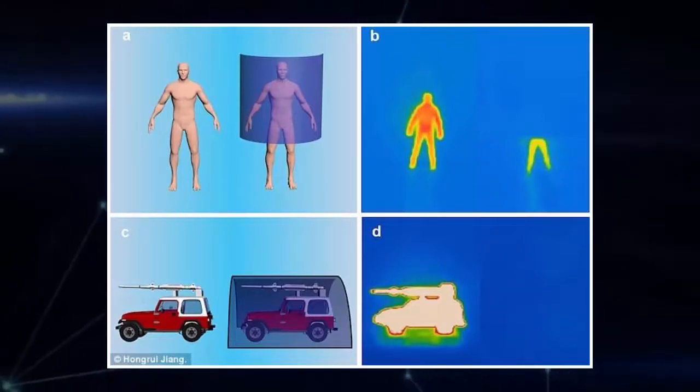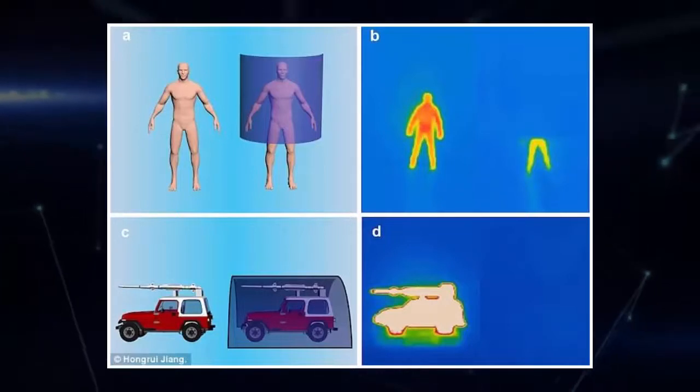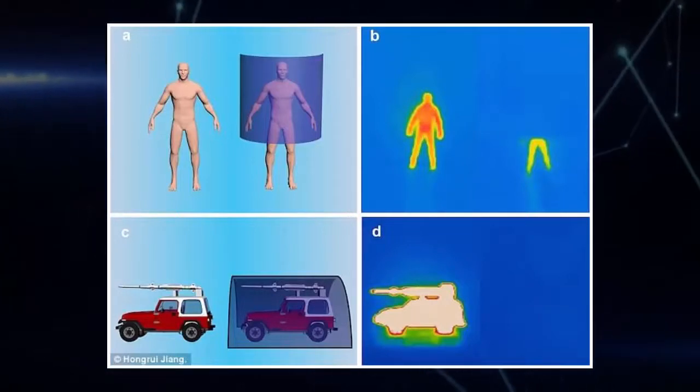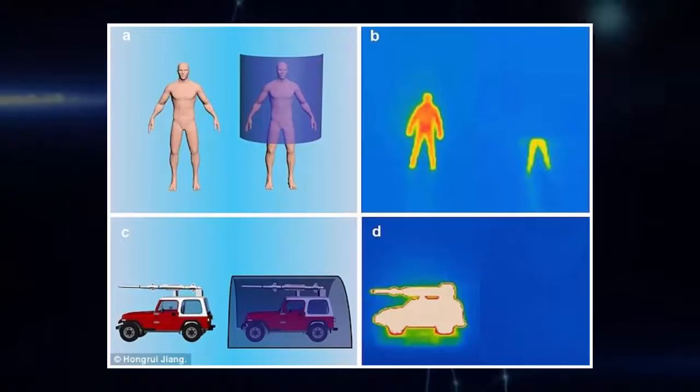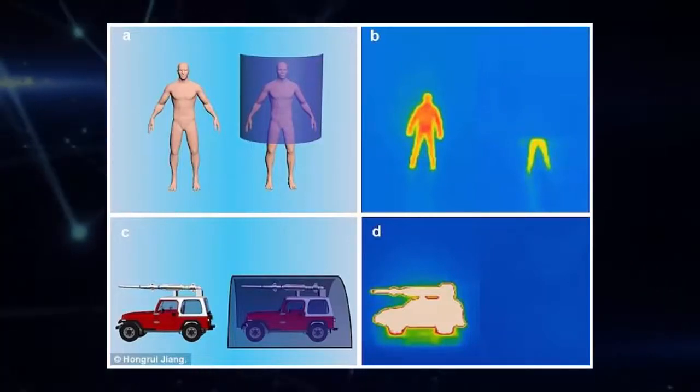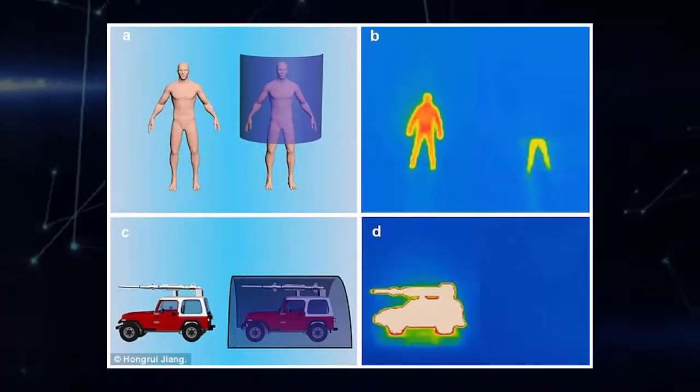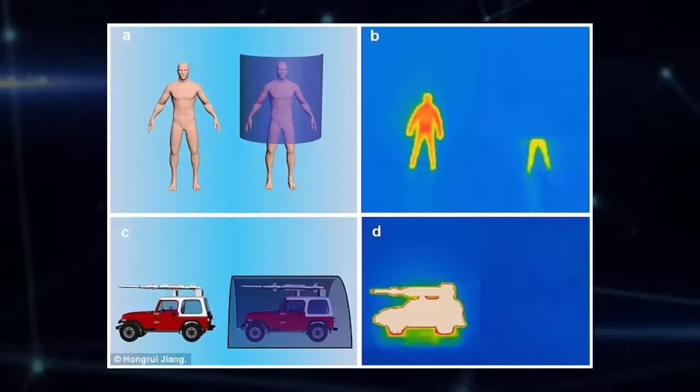Black silicon has been known to trap visible light, but the researchers realized it could also trap infrared light. We didn't completely reinvent the whole process, but we did extend the process to much taller nanowires, Jiang said.